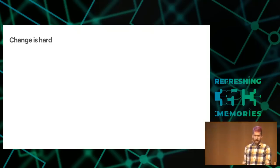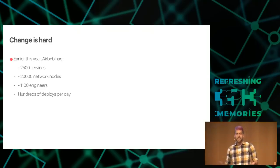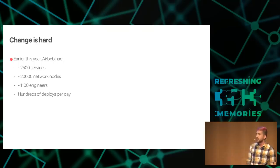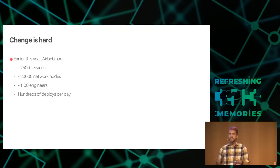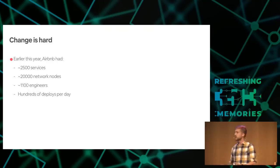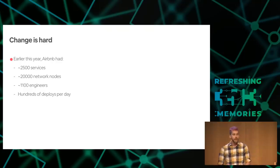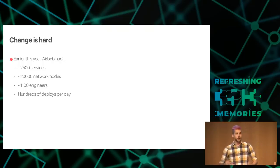Change is hard, especially with a pretty large network. To give you an idea of the scale: earlier this year when we were implementing this, Airbnb's production network had about 2,500 services, about 20,000 nodes — where a node is something like a host, whether it's an EC2 instance or a Kubernetes pod — and over a thousand engineers doing hundreds of production deploys per day. Things are moving really fast, making it hard to build in large architectural changes like adding segmentation.